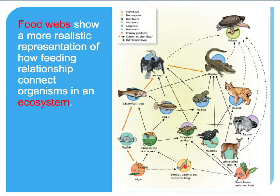The food web is far more complex, and there is a key showing what the different colored circles under the organisms represent — whether it's a carnivore, omnivore, producer, herbivore, etc. Another organism we haven't discussed is the scavenger, which is similar to a decomposer and helps clean up waste in the environment. Decomposers and scavengers are really important for maintaining an ecosystem by cycling nutrients and matter throughout.